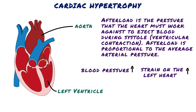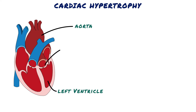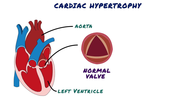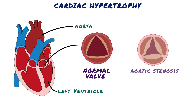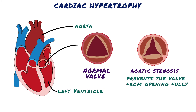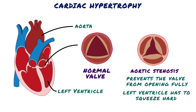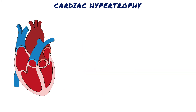Blood goes from the left ventricle through the aortic valve to the aorta. In aortic stenosis, the aortic valve narrows, preventing the valve from opening fully, which reduces or blocks blood flow from the heart into the aorta and onward to the rest of the body. The left ventricle has to squeeze hard against the resistance posed by the stenotic aortic valve, and over time this can cause left ventricular hypertrophy.